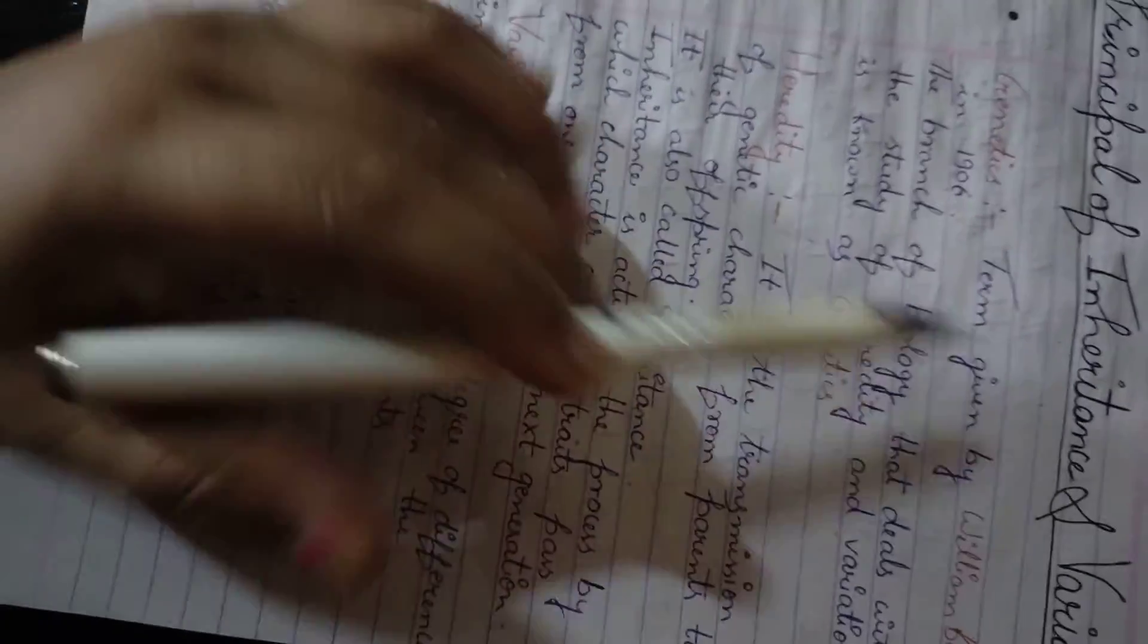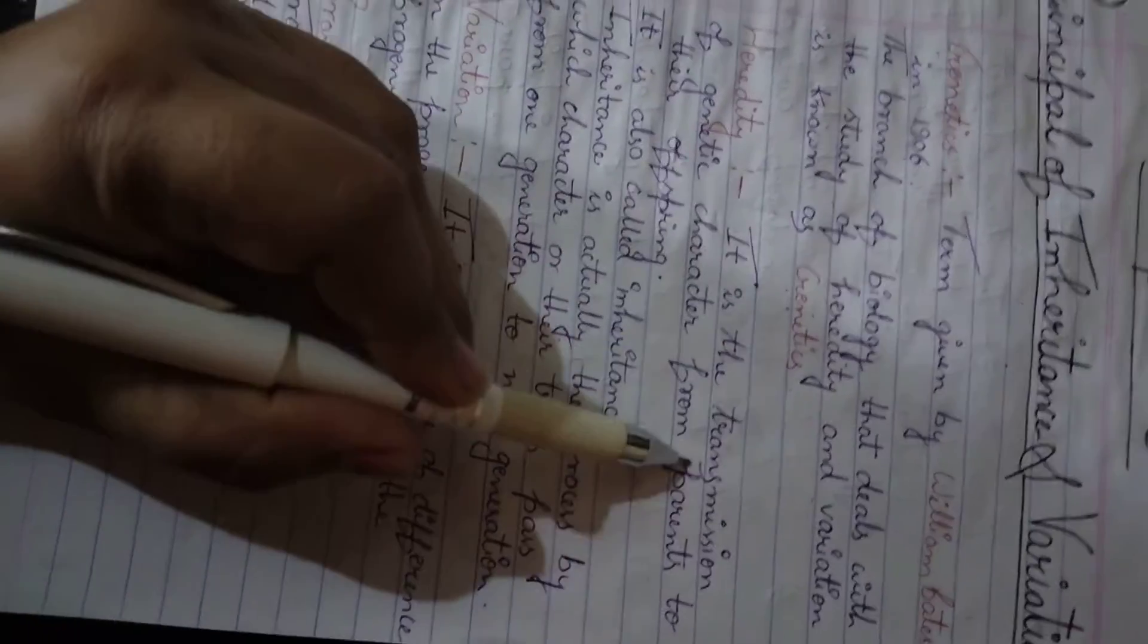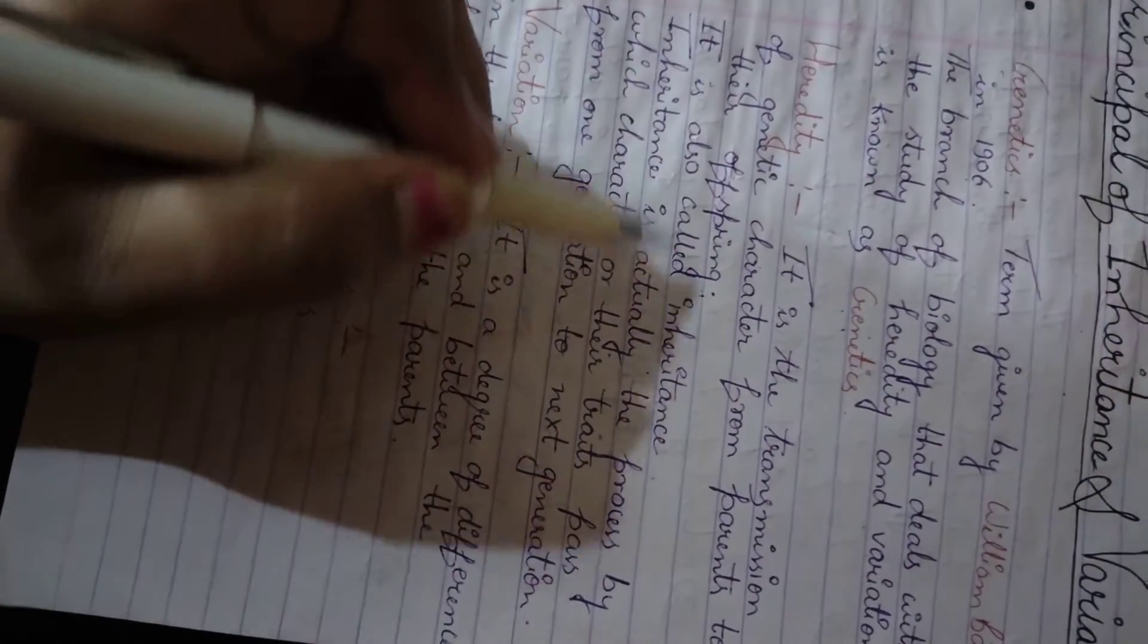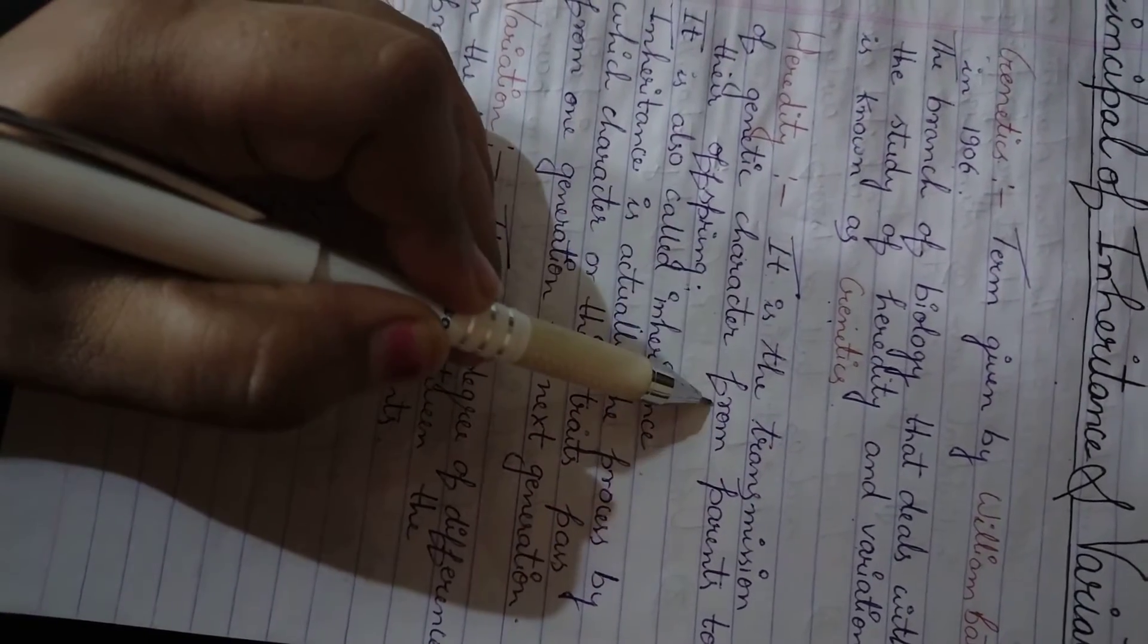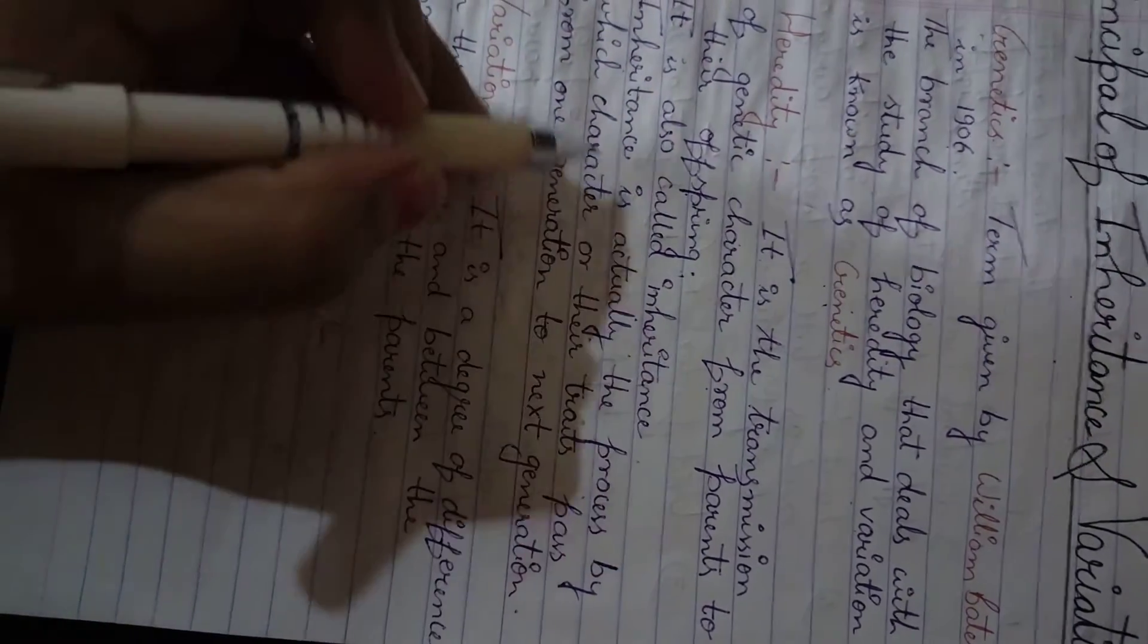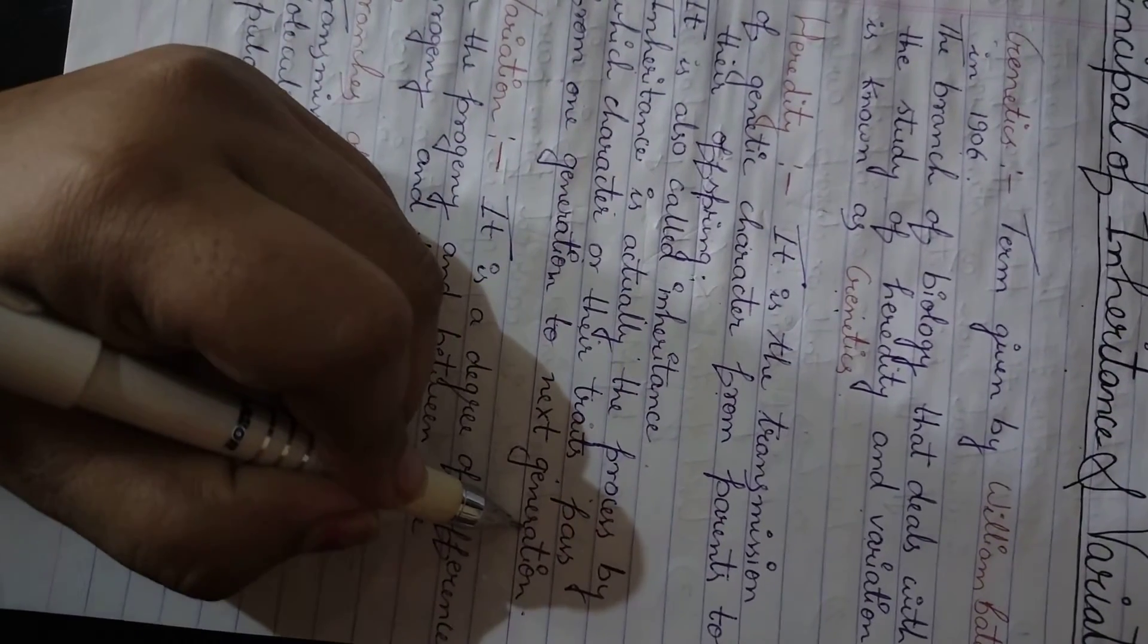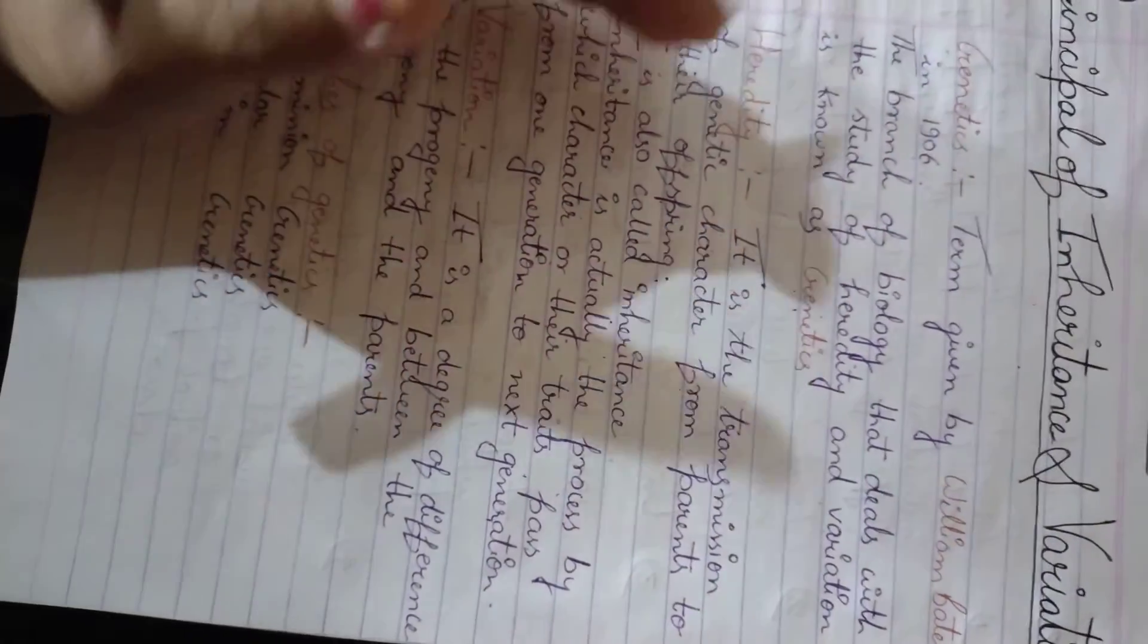Next is heredity. So we have already understood what is inheritance. Let's study the definition. It is the transmission of genetic character from parents to their offspring. The inheritance we call heredity. It is also called as inheritance. So what happens in heredity? Inheritance is actually the process by which characters or traits pass from one generation to the next generation. The characters or similarities which are passed from one generation to another generation is understood to be heredity.